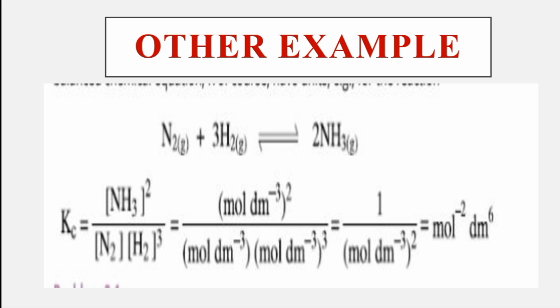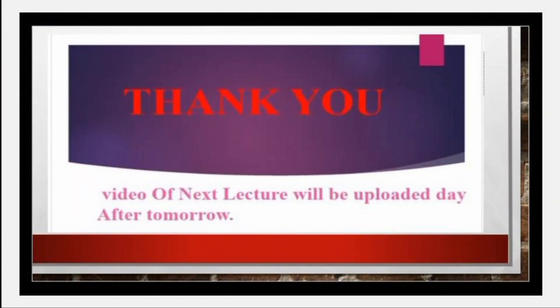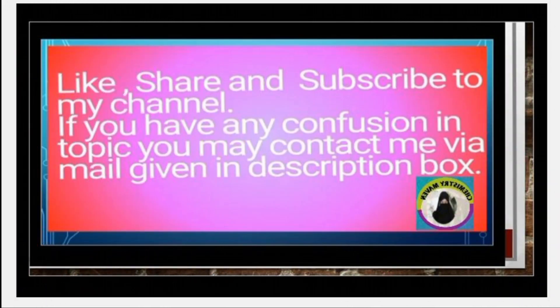نیچے total 4 powers ہیں اور اوپر 2، تو 2 کٹ جاتے ہیں اور نیچے 2 باقی رہتے ہیں یعنی (mol dm⁻³)²۔ جب نیچے سے کوئی چیز اوپر آتی ہے تو sign بدلتا ہے: minus plus بنتا ہے۔ اس لیے Kc کا unit ہوگا mol⁻² dm⁶۔ یہ آج کا lecture تھا — equilibrium constant کی definition، expression لکھنا اور unit determine کرنا۔